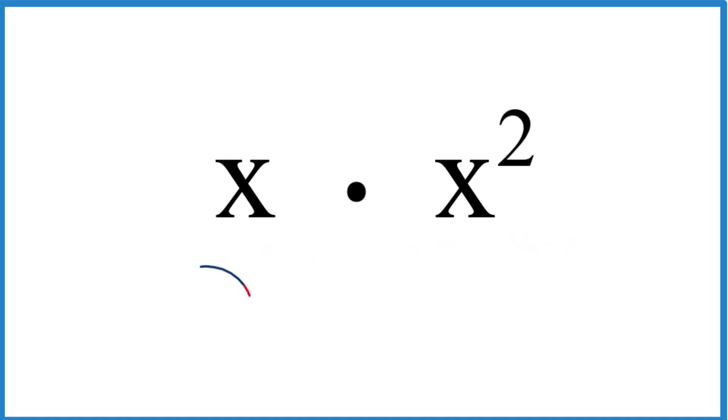First, you could just call this x times, x squared is x times x, so just x times x times x. Three x's is x to the third. That's the first way.